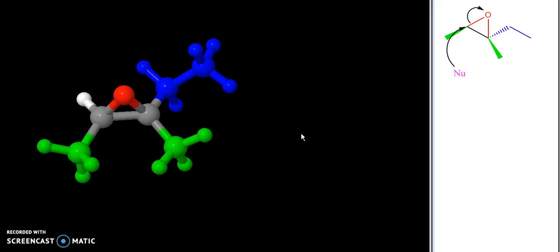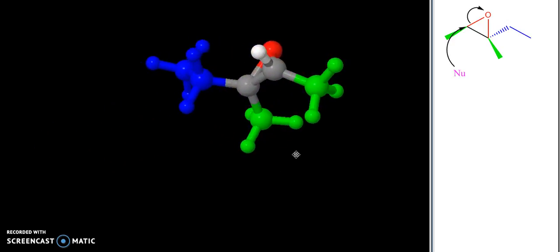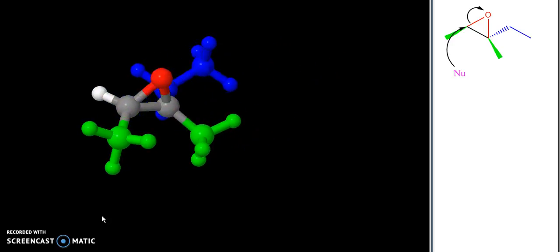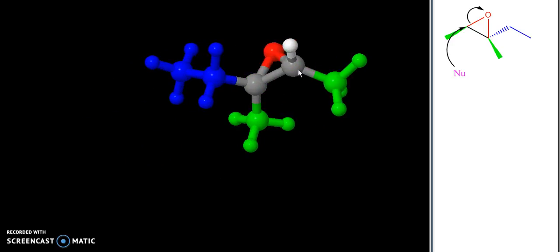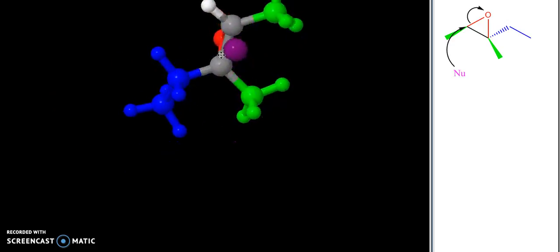Something to keep in mind is that this is going to be an SN2-like attack in a lot of ways, and that the nucleophile is going to come from the less hindered side, which is this side, and the side that's opposite of my leaving group, which in this case is the oxygen of the epoxide. If this purple sphere is our nucleophile, it's coming in from this side where the oxygen leaves from the top. You can see I've put